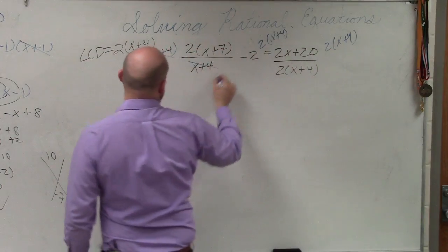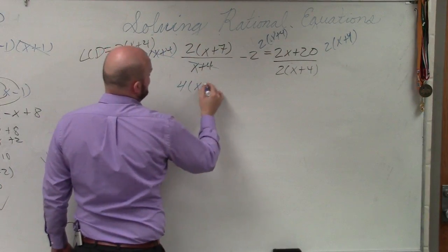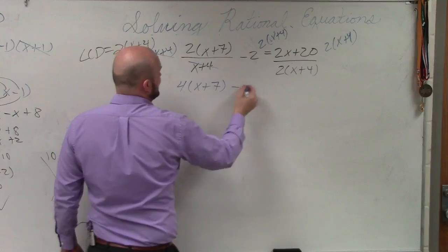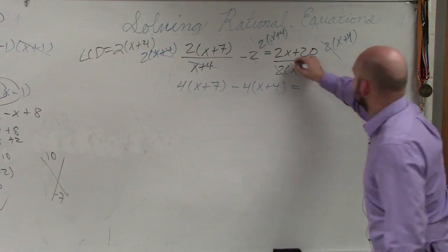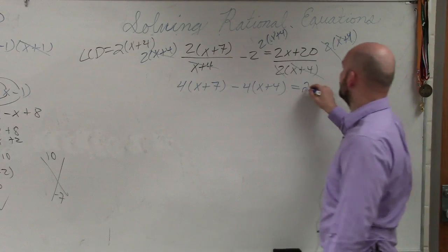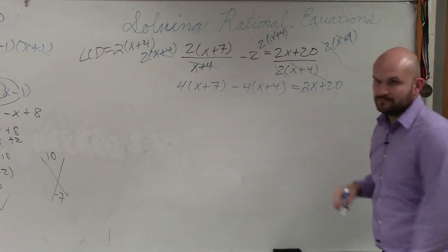What happens is my (x+4)'s divide out. So I'm left with 4(x+7) minus 4(x+4) equals... the 2's divide out, the (x+4)'s divide out. So I'm just left with 2x+20.